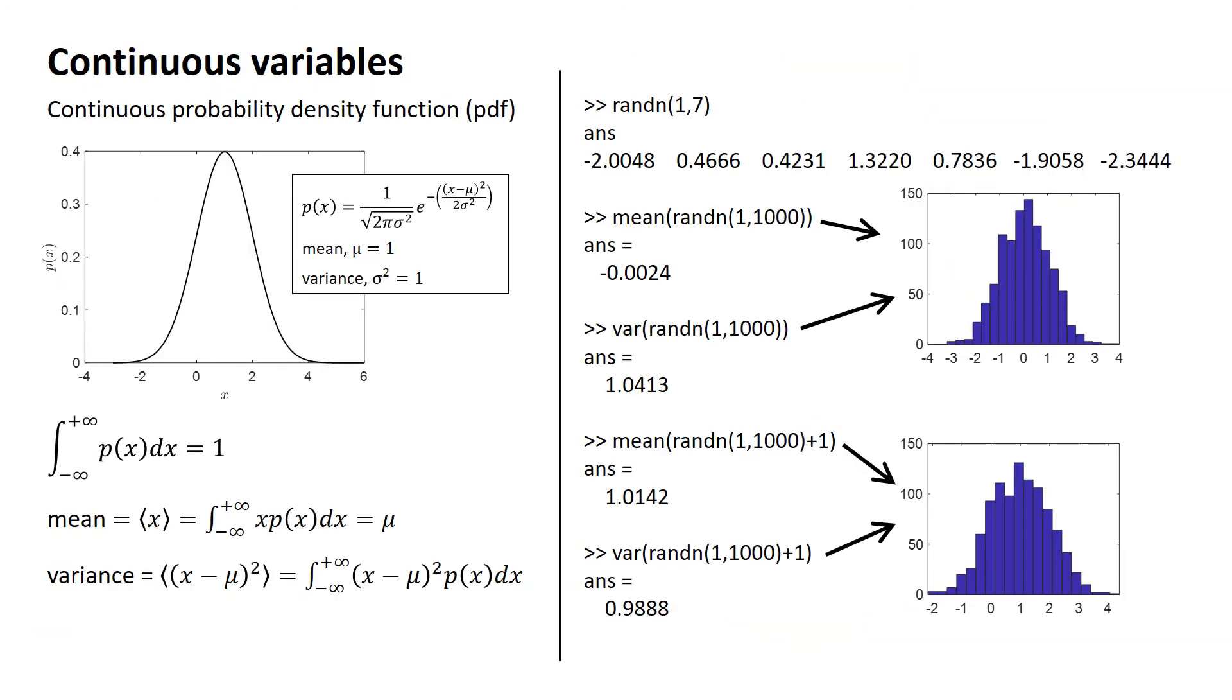To see how things work in the continuous, or the continuum world, we can do some more computer experiments. We can use this MATLAB command which generates samples from a Gaussian normal distribution with mean 0 and variance 1. So for example, here are seven numbers drawn from that distribution. And you might notice these are not integers, but real numbers now. So if we compute the mean of a population of 1,000 numbers drawn from that distribution, we get something close to 0. And for the variance, we get something close to 1. And here I made a histogram for a 1,000 number population drawn from that distribution. So here in this histogram, it's centered roughly on 0. It corresponds to these experiments.